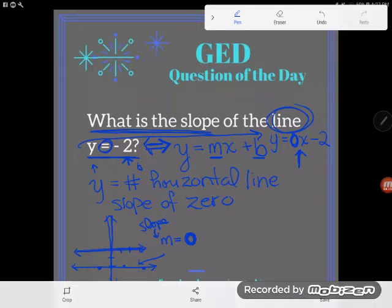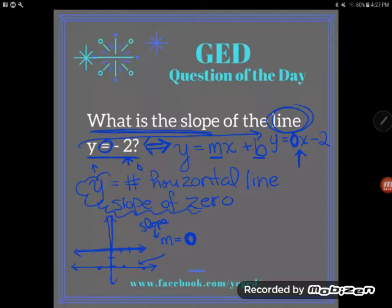So two different ways I can prove it. But again, if it were me, I would just want to have this fact memorized. When y is equal to a number, we've got a horizontal line. Slope of zero.